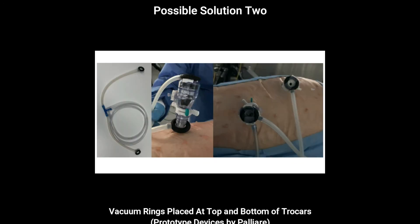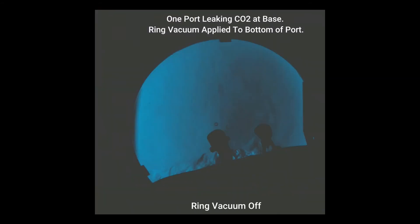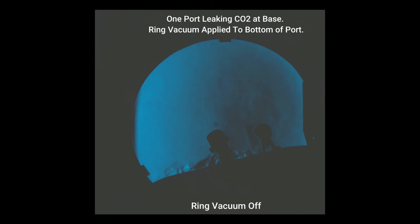Another approach could be to place vacuum rings at the top and base of the trochars to manage whatever leakage occurs. Here we can see the effect of switching on the vacuum via a ring placed at the bottom of the trochar in managing an incisional gas leak.